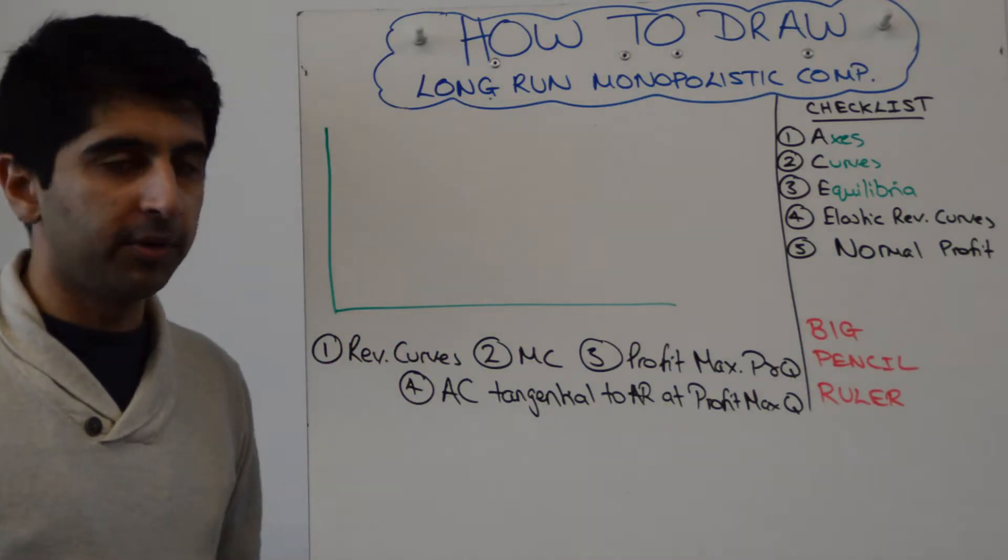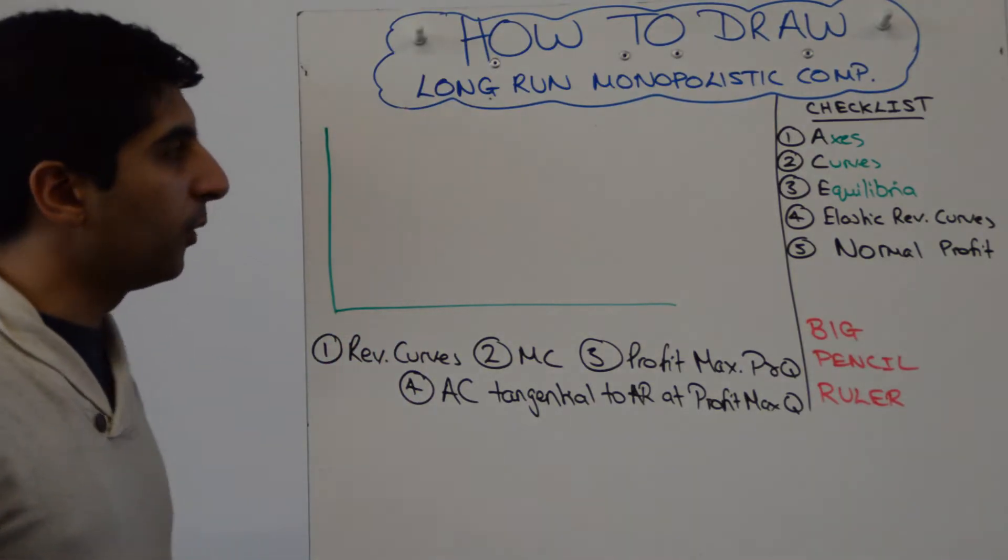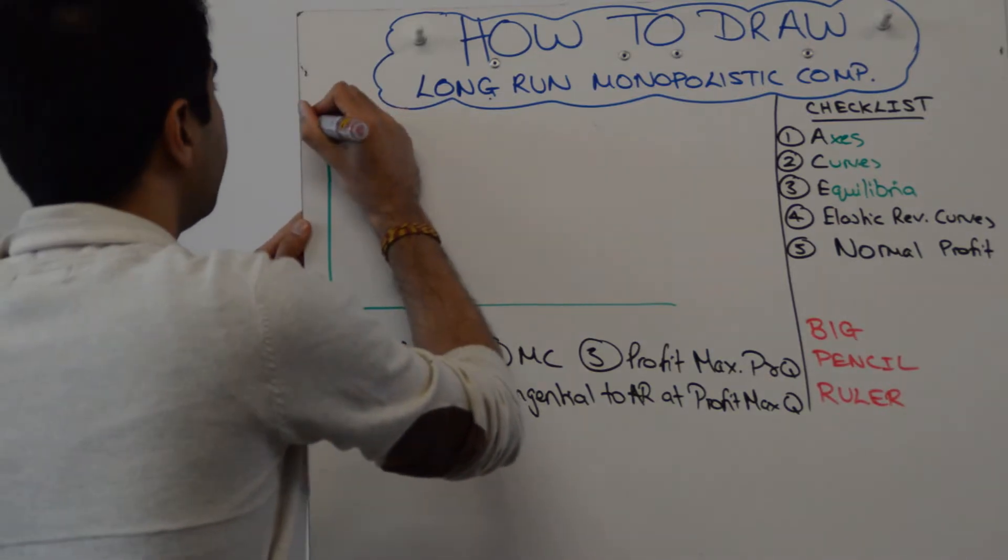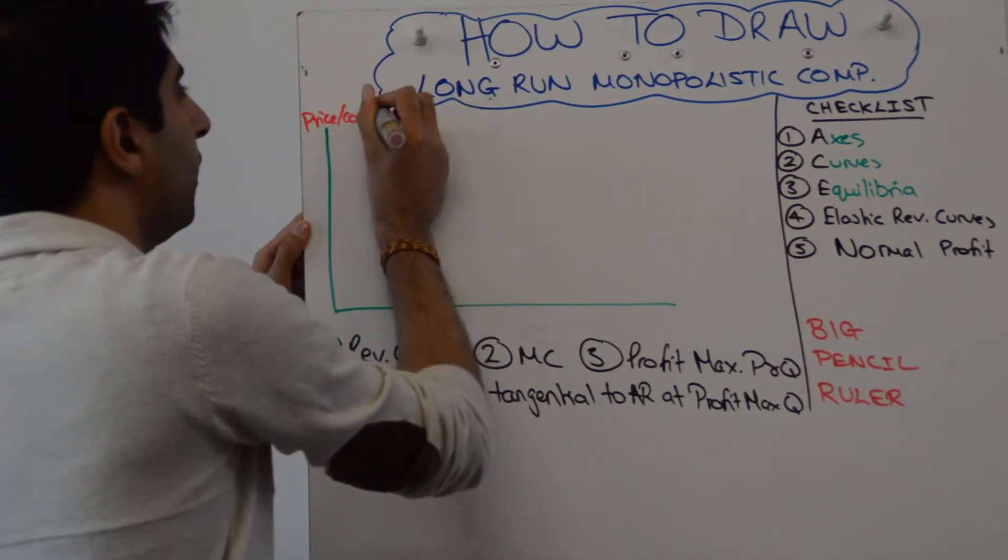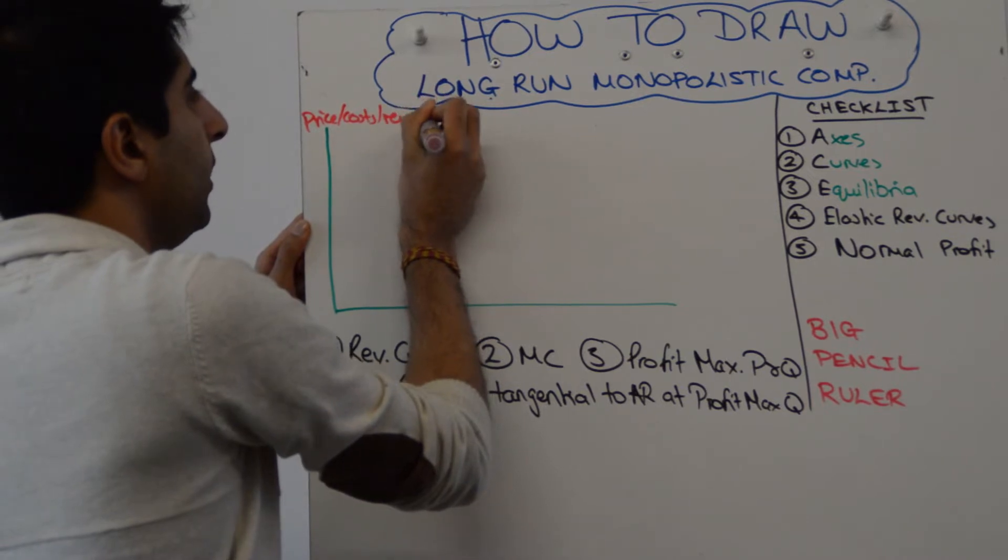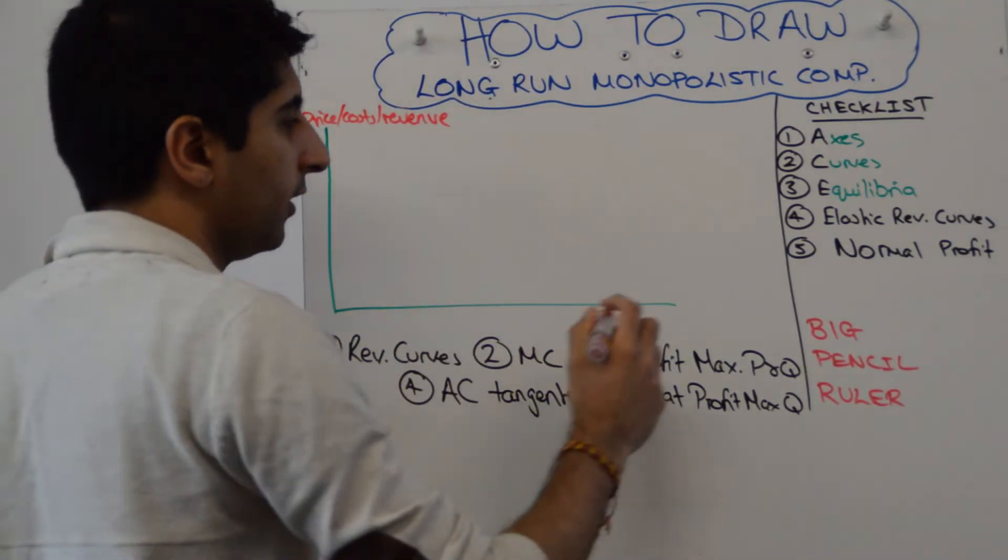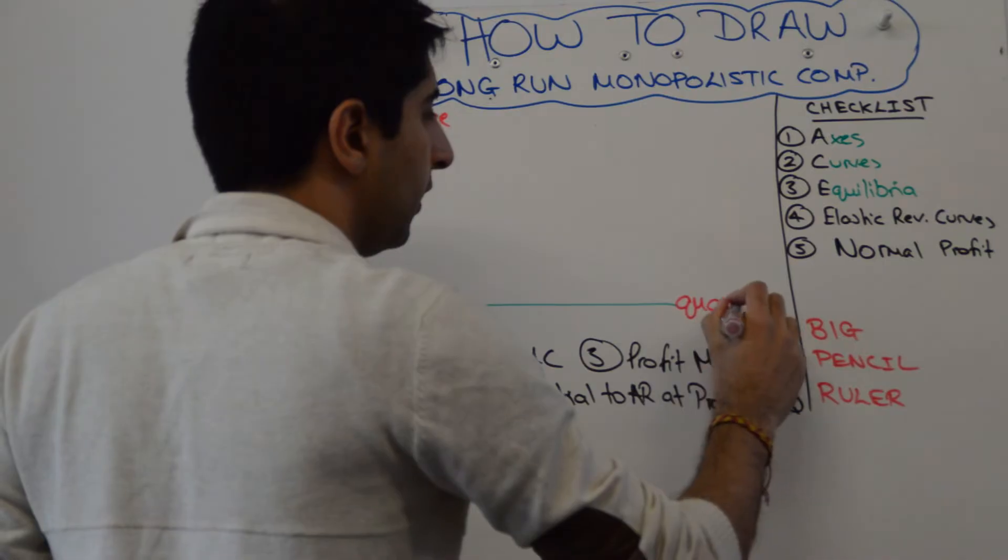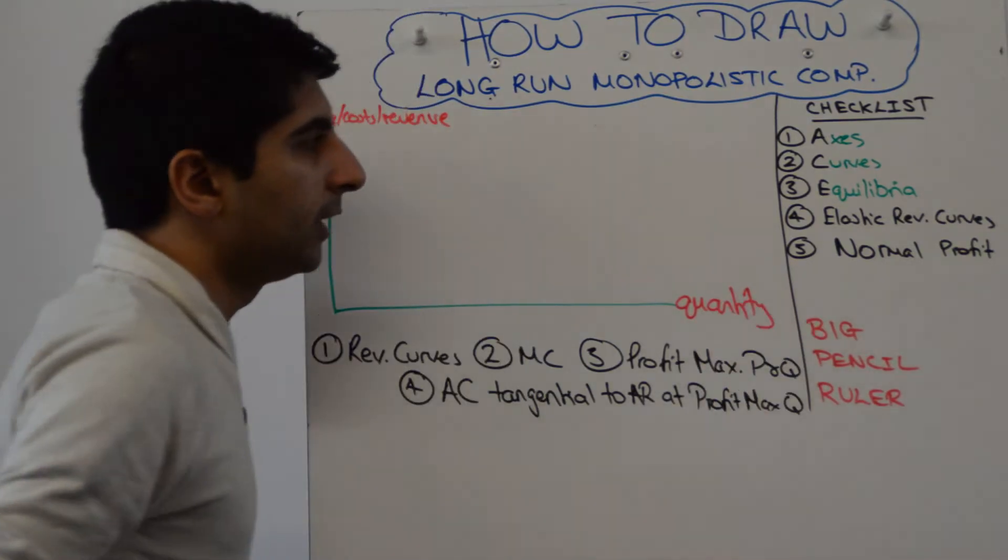How do we construct it? Well, first we start by labeling our axes: price, costs, and revenue as we're used to doing on market structure diagrams, and quantity on the x-axis.